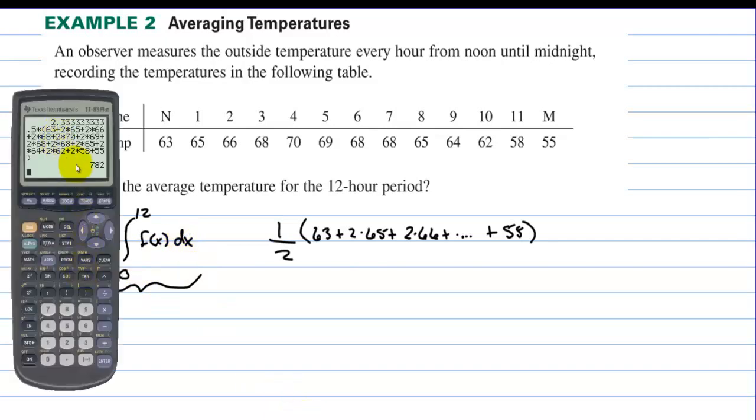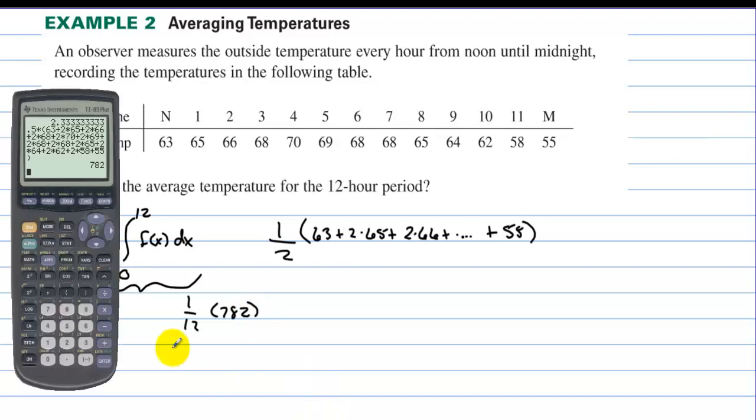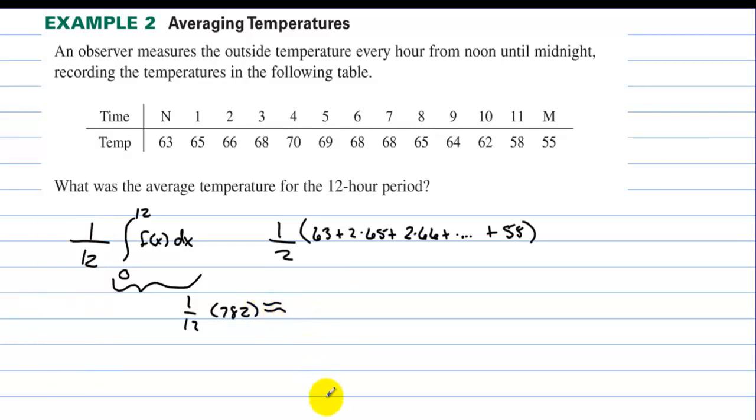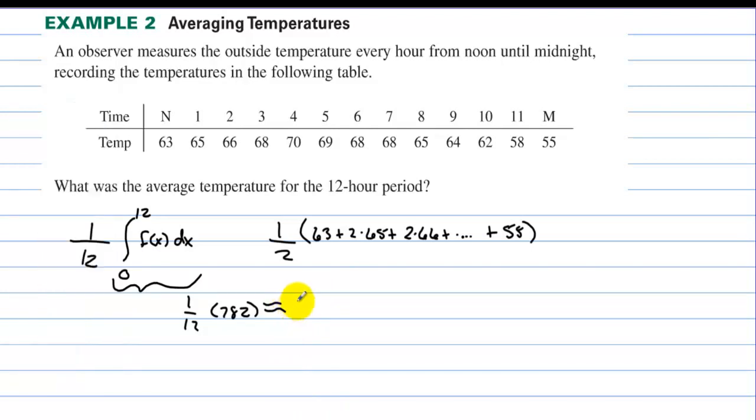The approximation of the area is 782. We have 1 over 12 times 782, and we need to divide 782 divided by 12. So the average temperature is approximately, let's bring that back up, 65.167. And looking at all the temperatures, that seems like a pretty accurate average.